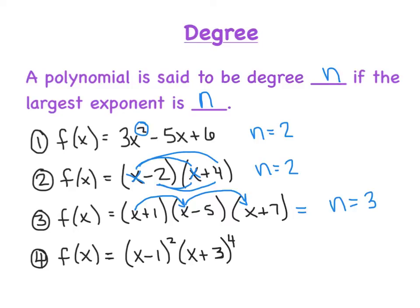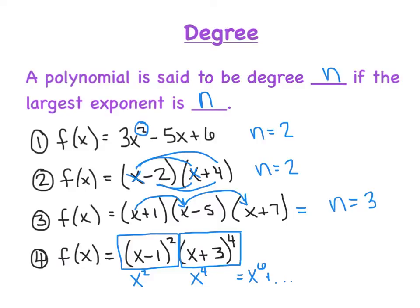For more complex examples, we don't literally distribute — we just visualize the biggest term. If the first group foils to x squared, and the next factor foils to x to the 4th, then x squared times x to the 4th gives x to the 6th. That's the biggest term, so it's a degree 6 polynomial, or n equals 6.